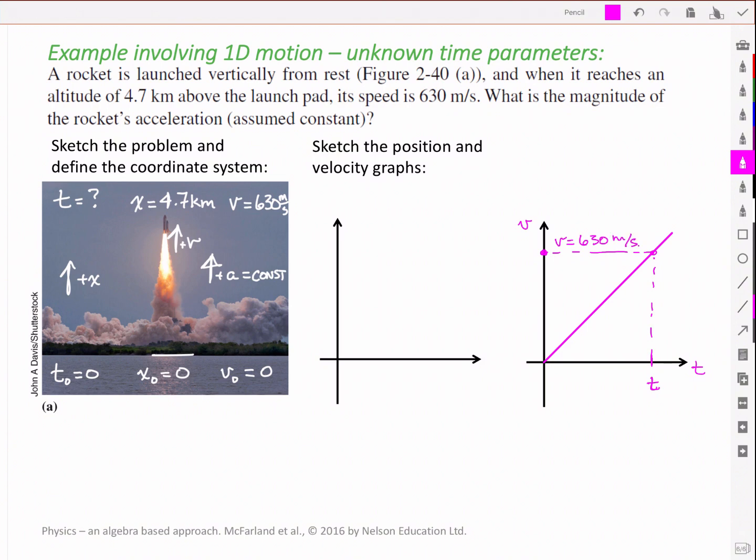So you'll notice it's a straight line because it's a constant acceleration, and the acceleration is the slope of the velocity time. So we have here a positive constant slope, and that is our acceleration.